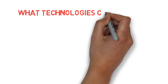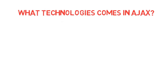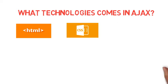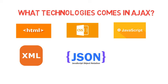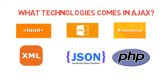So what technologies comprise Ajax? The technologies involved are HTML, CSS, JavaScript, XML, JSON, and PHP. HTML and CSS are used at the client side, JavaScript is used to make requests, XML and JSON are the request formats, and PHP is used at the server side.